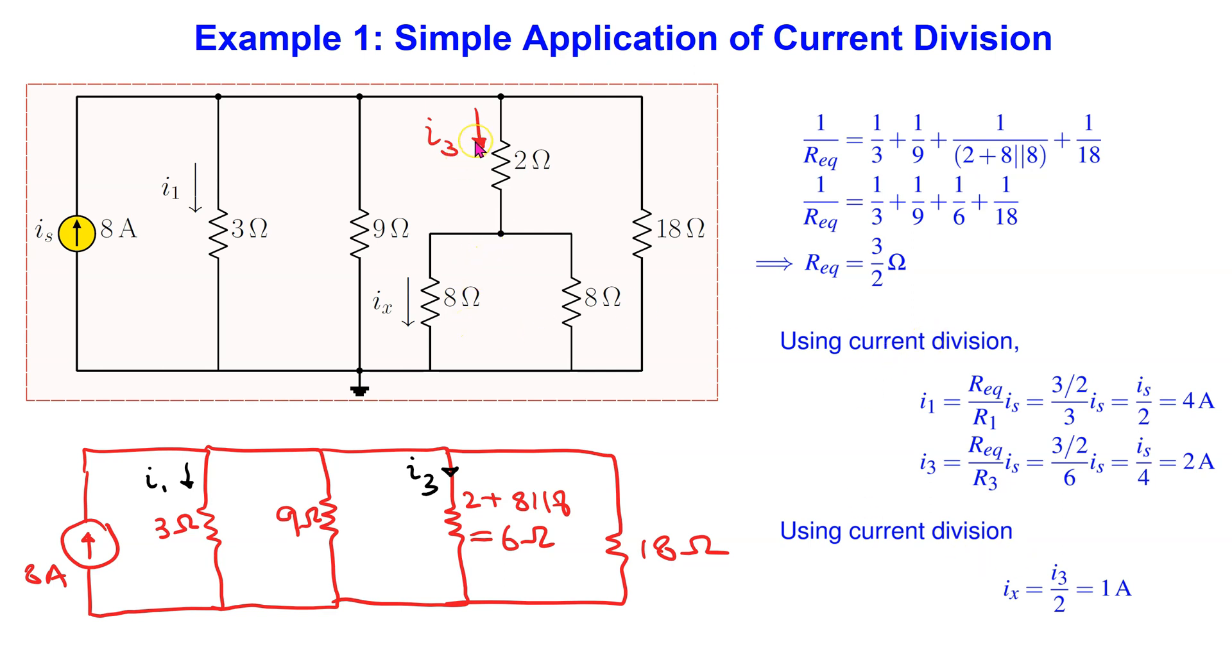I3 divides equally among the two resistors and we get Ix as shown. Please pause the video now if you wish to study this in more detail.